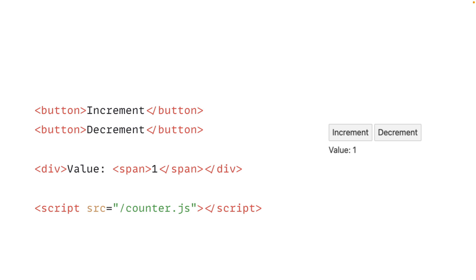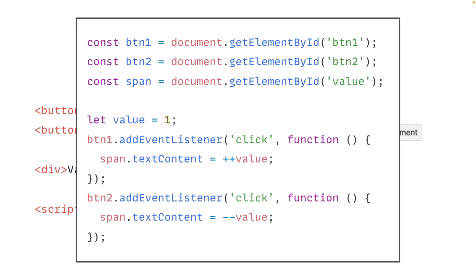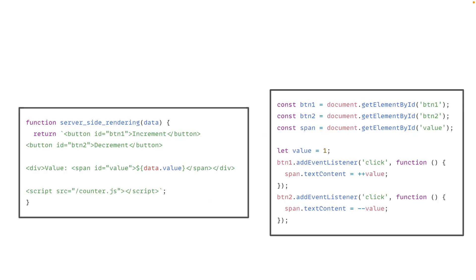So what is in that JavaScript code? It needs to find the two buttons and a span. In the server-side rendered HTML, those elements would usually be given ID attributes to make it easy for the JavaScript to find them. In our JavaScript code, we use getElementById to find them, and then we add event listeners so that on click, you can modify the span value. Notice that in this case, the code to generate the HTML — the server-side rendered code — is quite separate from the code that modifies the DOM. You have two separate sets of code.